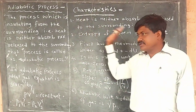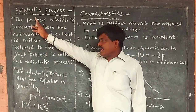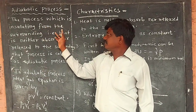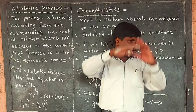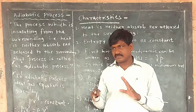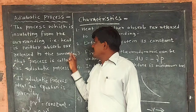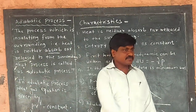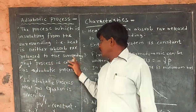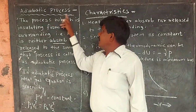Define adiabatic process and give its characteristics. Adiabatic process is one which is insulating from the surrounding — insulating coating — where heat is neither absorbed nor released to the surrounding. That process is called adiabatic process.